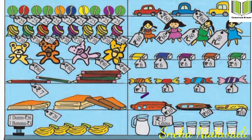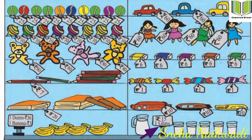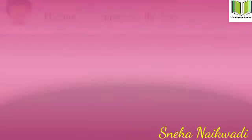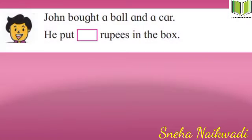The eraser is 6 rupees, the chocolate is 1 rupee, some packets are 10 rupees, and one glass of milk is 15 rupees.